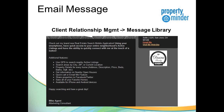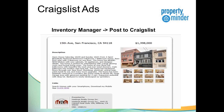In your client relationship management system and message library, we have a pre-configured message you can send out to your clients letting people know about your new mobile application. You can also customize this as well. When you're posting to Craigslist in your inventory manager, you should be posting your listings on a regular basis. Go ahead and insert a link - 'search homes with your smartphone, download my mobile app' - as you go through the posting to Craigslist tool, those of you who have done it before know how it works.